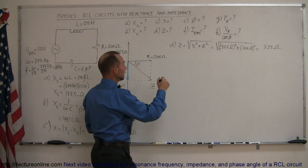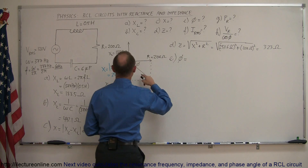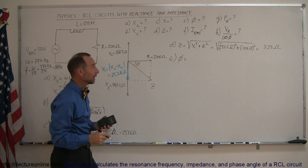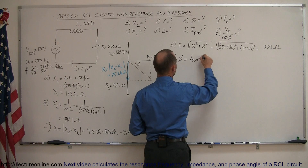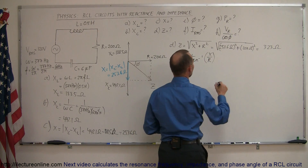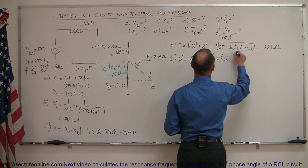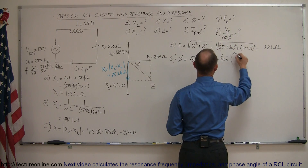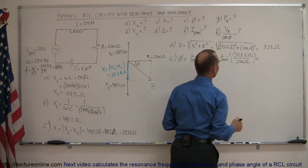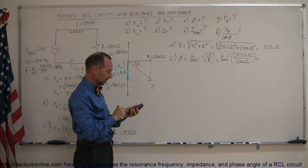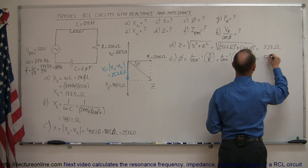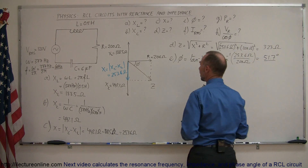Next, Part E, we want to find the phase angle — the angle that shows how the voltage lags the current. We find it by taking the arc tangent of the opposite side, which is the reactance, divided by the adjacent side, which is the resistance. So this equals the arc tangent of 253.6 ohms divided by 200 ohms. Taking the arc tangent of that, we get 51.7 degrees.